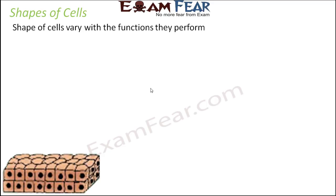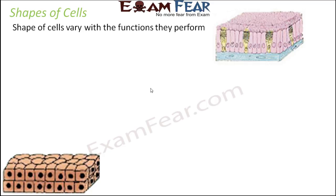Let us look at some cells of different shapes. If you look at ciliated epithelial cells, these cells are long and narrow, and at the same time they have cilia. The cilia increases the surface area, helping in further absorption. Comparing ciliated epithelium and cuboidal epithelium, both are epithelial cells but their shapes are different.